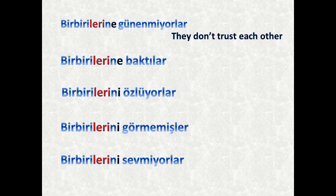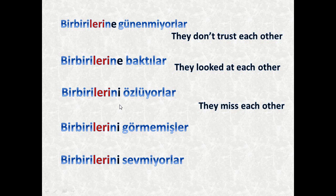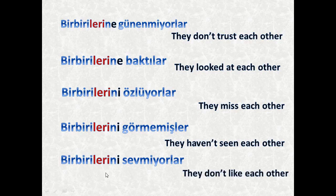Birbirlerine güvenmiyorlar — they don't trust each other. Birbirlerine baktılar — they looked at each other. Birbirlerini özlüyorlar — they miss each other. Birbirlerini görmemişler — they haven't seen each other. Birbirlerini sevmiyorlar — they don't like each other.